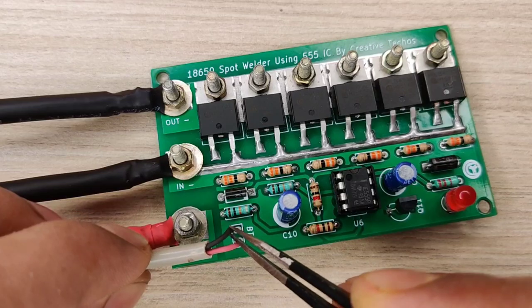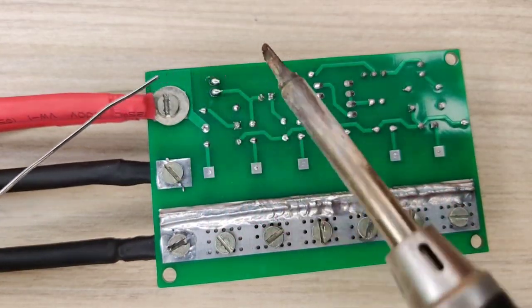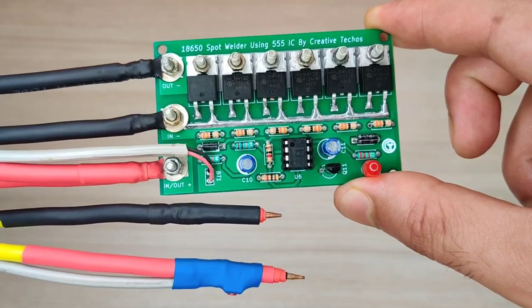Connect the wires at its place marked with BT1. Now finally our spot welder is ready to test.